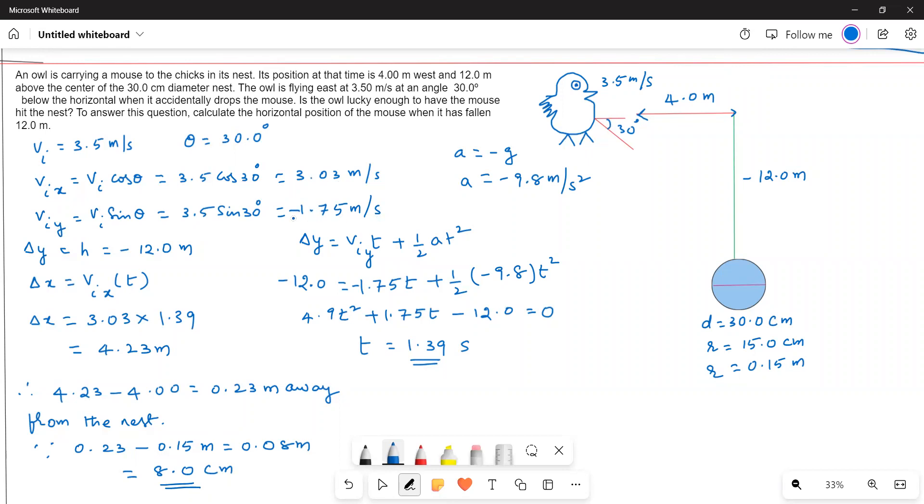I made these negative because the angle is 30 degrees below the horizontal and it is falling. The y direction is negative and x direction is positive because it's traveling east from west.